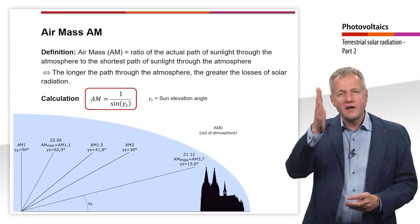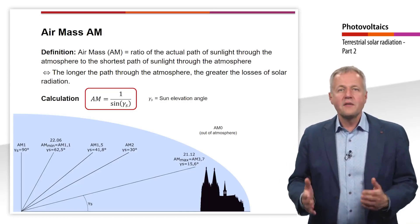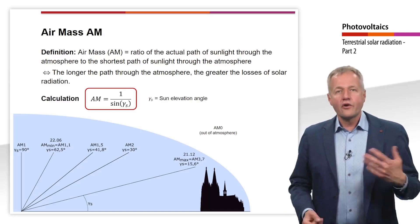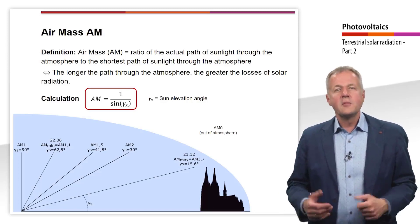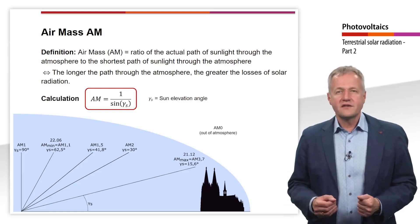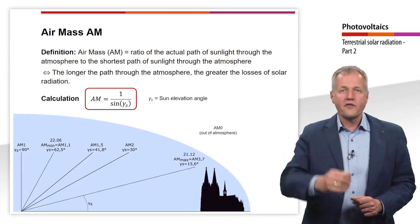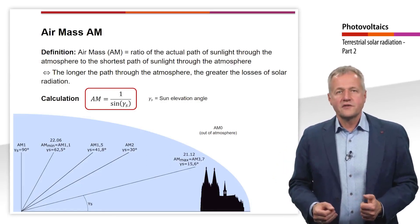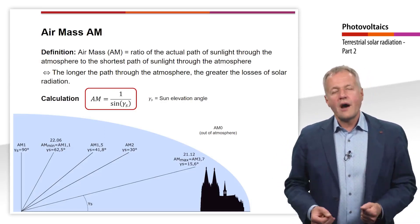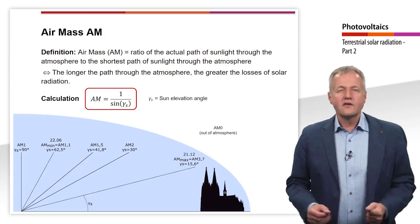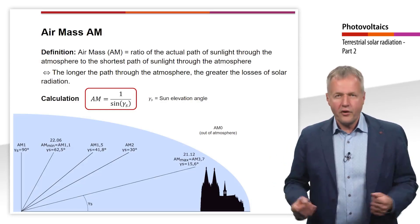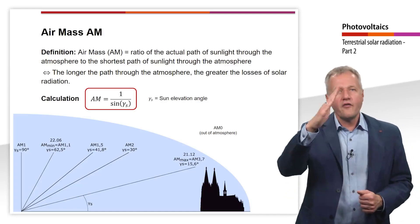The shortest path of sunlight through the atmosphere is air mass 1, when the sun position is perpendicular or normal to the Earth's surface — this only occurs in the tropics. In Cologne, the minimum air mass is 1.1, reached at noon around June 22nd when the sun elevation angle is 62.5 degrees. The lowest sun elevation angle at noon in Cologne occurs around December 21st, at 15.6 degrees, giving a corresponding air mass of 3.7. AM1.5 corresponds to a sun elevation angle of 41.8 degrees.